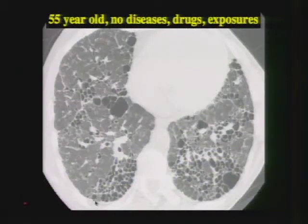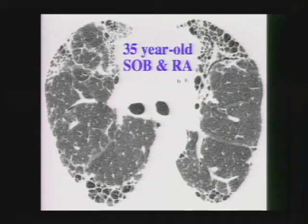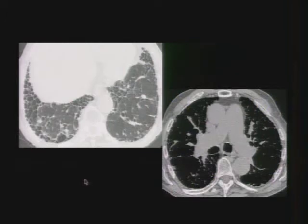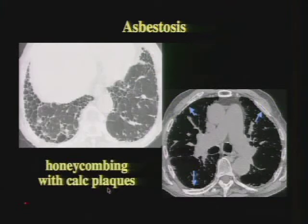A 55-year-old patient with no diseases, no drugs, no exposures — we see honeycombing in the subpleural lung: UIP-IPF. A 35-year-old with shortness of breath and rheumatoid arthritis: by definition this cannot be IPF, but it shows honeycombing — this is rheumatoid lung disease, looking exactly the same. And here a patient with peripheral and basal honeycombing, but on tissue window we see calcified pleural plaques — this is asbestosis. On lung window it looks exactly like IPF, but the calcified pleural plaques give it away.